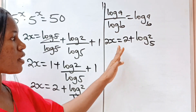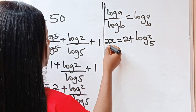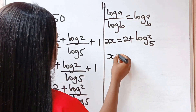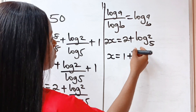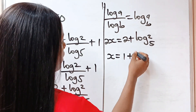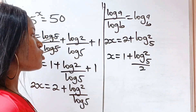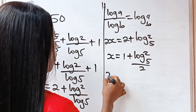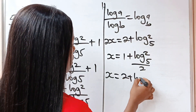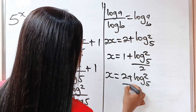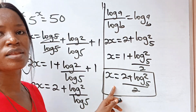Remember that we are asked to find x and not 2x. So to get the value of x, we divide both sides by 2. We have x is equal to 2 divided by 2, which is 1, plus log₅2 divided by 2. Or we can write x is equal to (2 plus log base 5 of 2) all divided by 2.